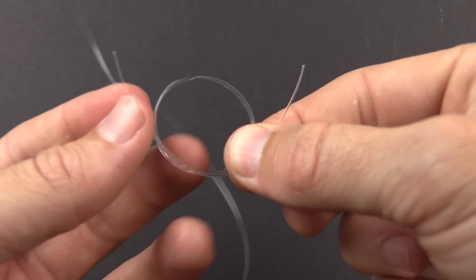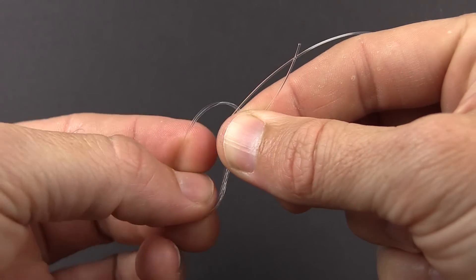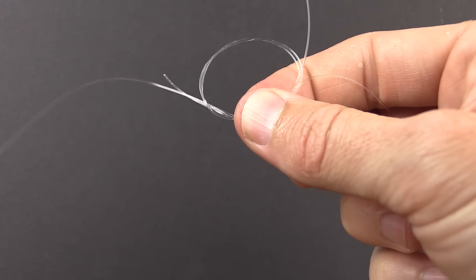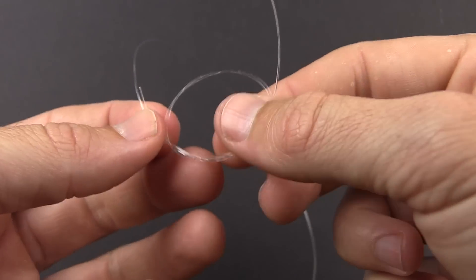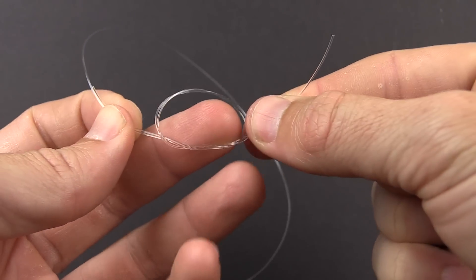We'll do it again for number two. Again, both lines go through there, and then once it's done, just thread the full length of leader through the loop. So that's two.